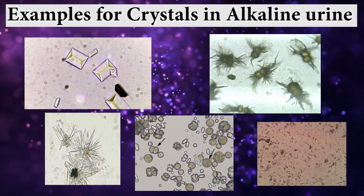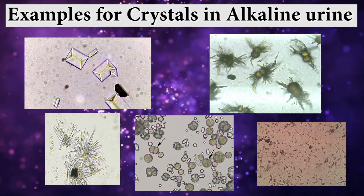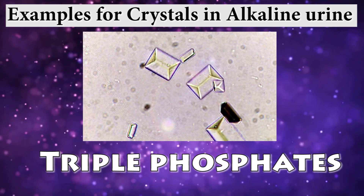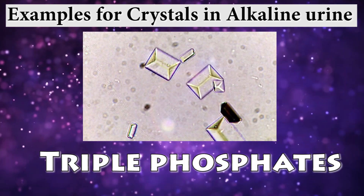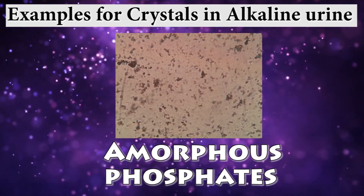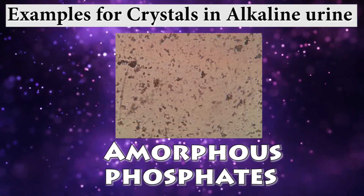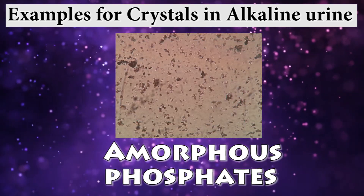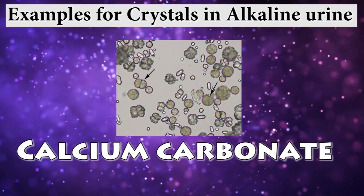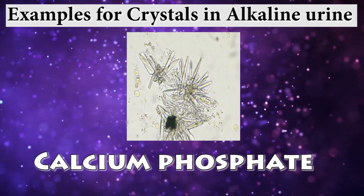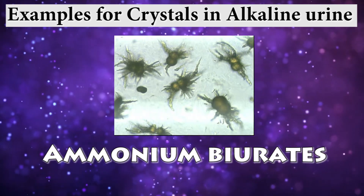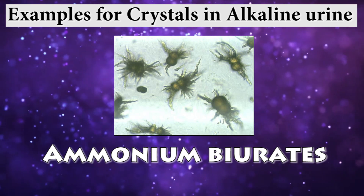Examples of crystals in alkaline urine include: triple phosphates, amorphous phosphates, calcium carbonate, calcium phosphate, and ammonium biurates.